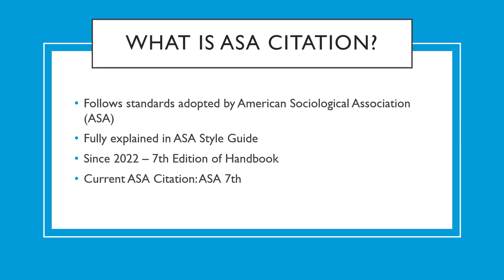To start out with, what is ASA citation? The ASA citation style is laid out in the ASA style guide, which follows the standards adopted by the American Sociological Association. This citation style is used most commonly by programs such as sociology and criminology. As of 2022, the ASA style guide is in its seventh edition, so the version of ASA citation we will be covering in this video is ASA seventh.